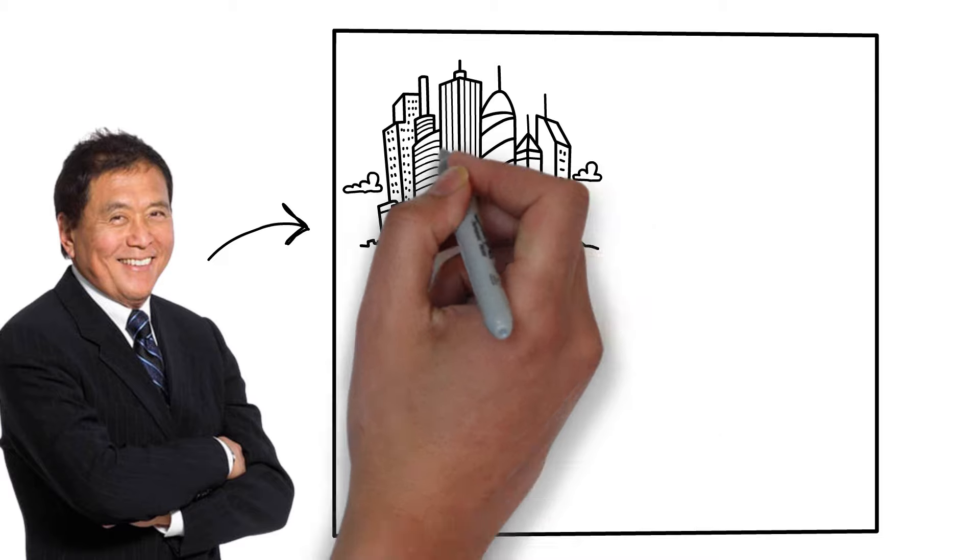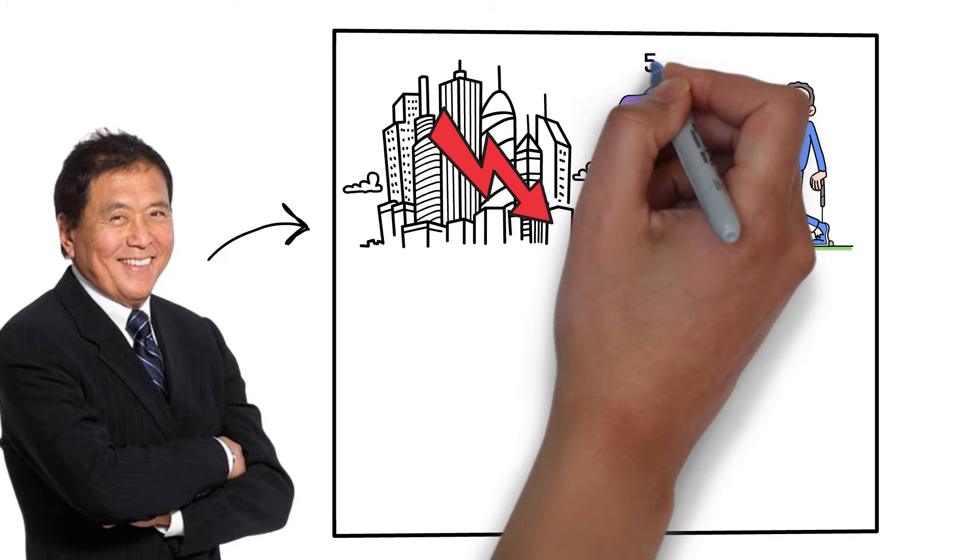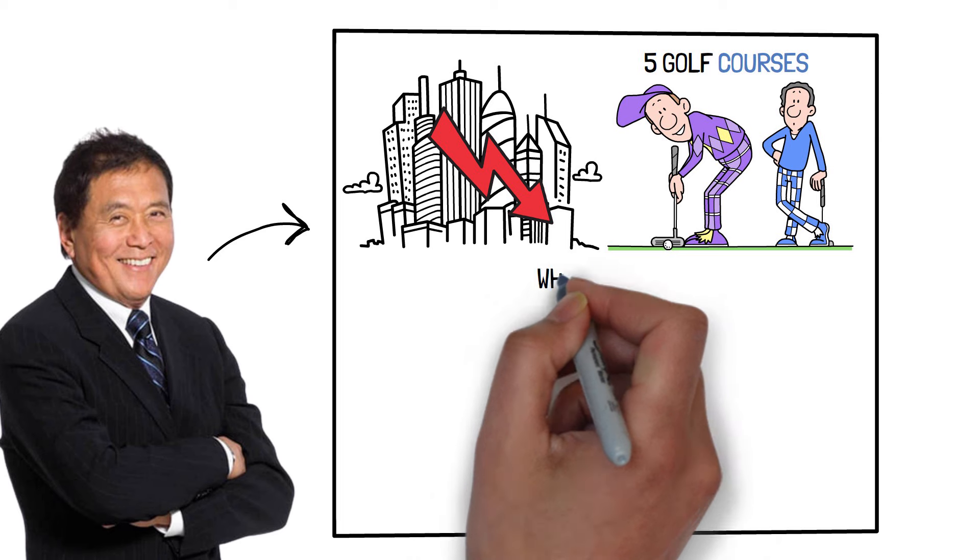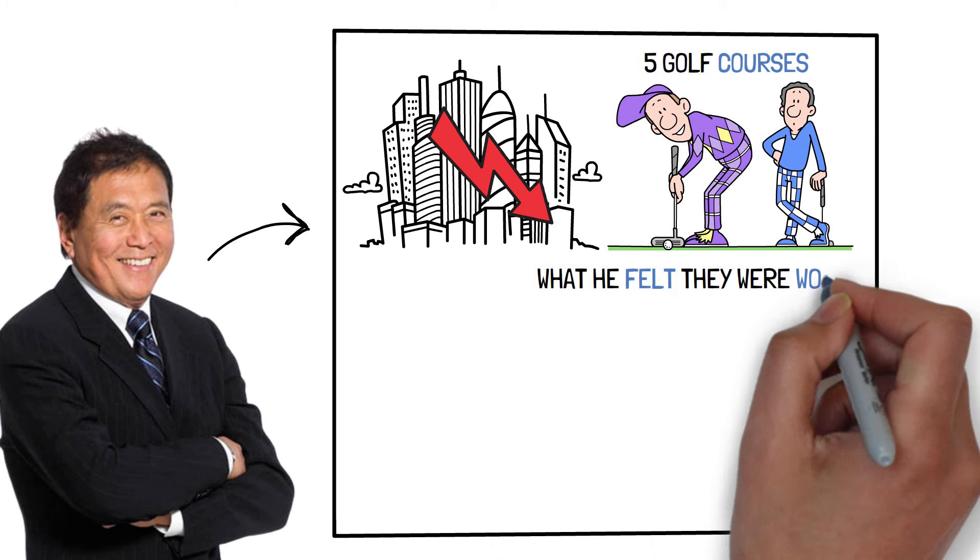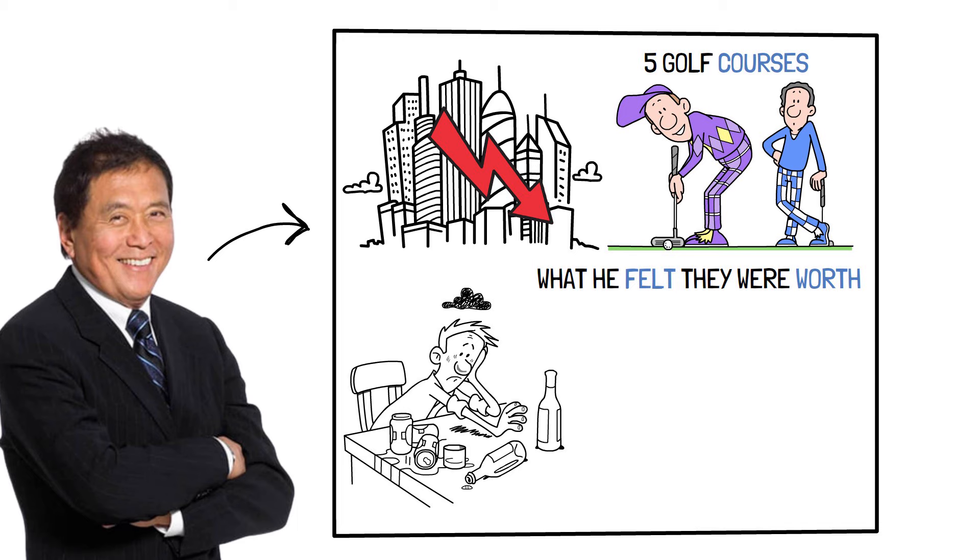When the real estate market plummeted, for example, Kiyosaki was able to buy five golf courses from a bank for a fraction of what he felt they were worth. Many individuals crumble under the weight of these uncertain times, but those who can think critically and act have enormous potential.